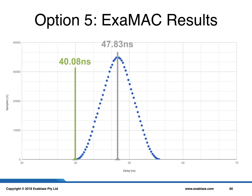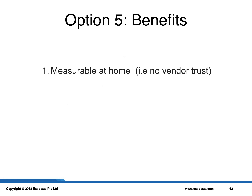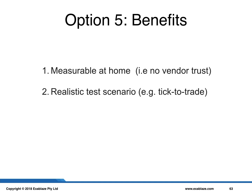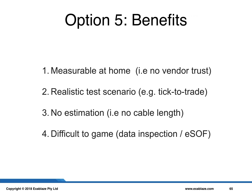Going forwards, this is the number Exablaze will use when quoting the performance of our MAC. Option 5 has several benefits: it is measurable at home without vendor trust or source code access; it is a realistic test scenario mirroring the tick-to-trade use case; no estimation of cable length is required, so measurement bounds can be quantified very accurately; and it is difficult to game because there is real data inspection on the critical path.